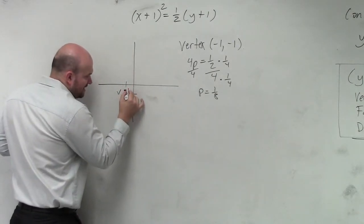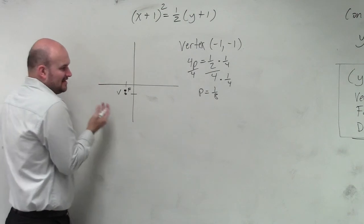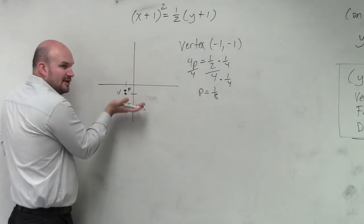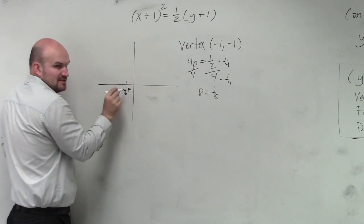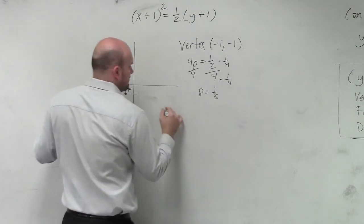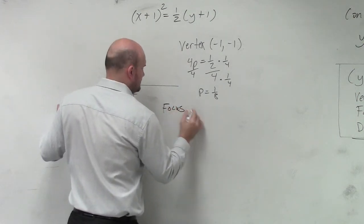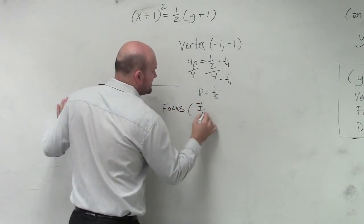I know it's kind of difficult to see that, but p is positive 1 eighth. Now think about it, guys. If you're at negative 1 and you go up 1 eighth, what is this focus? Negative 7 eighths, right? It's not that bad of fractions. Focus is at negative 7 eighths.